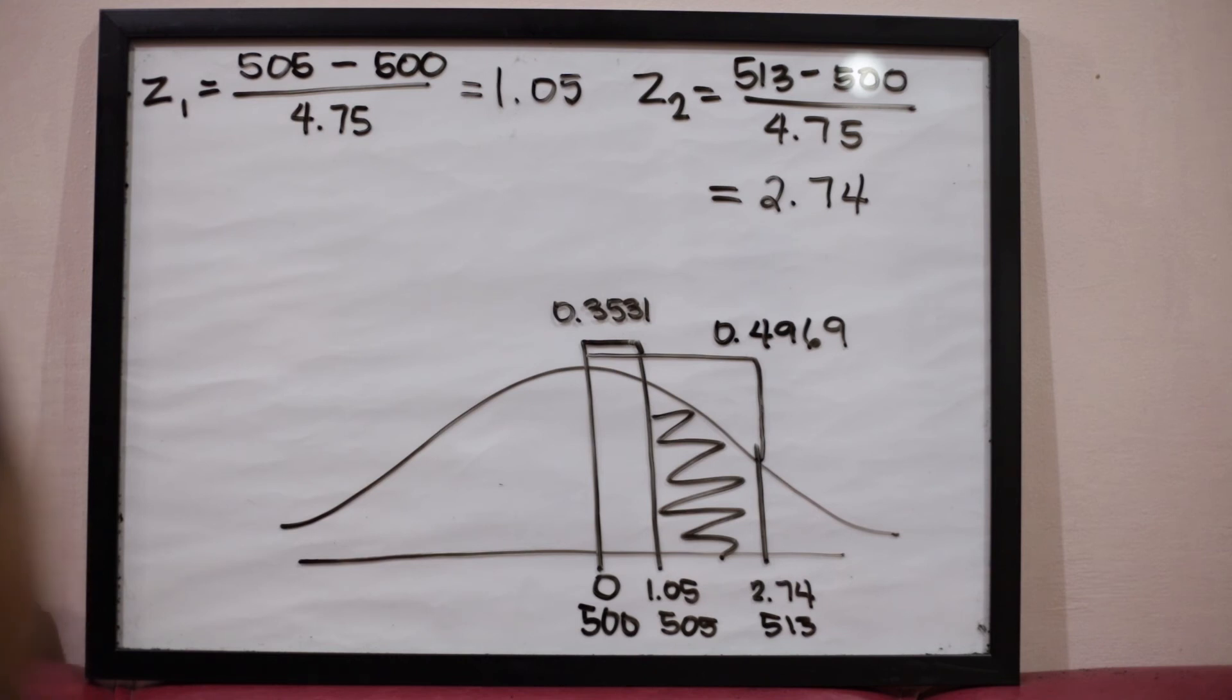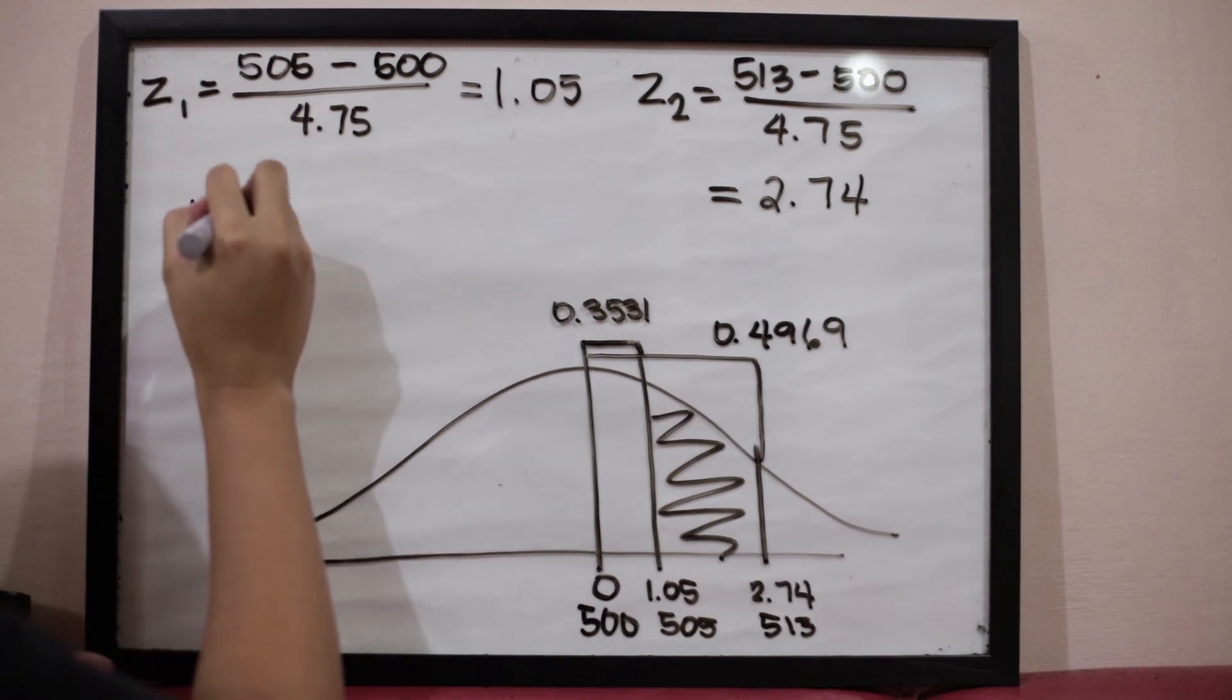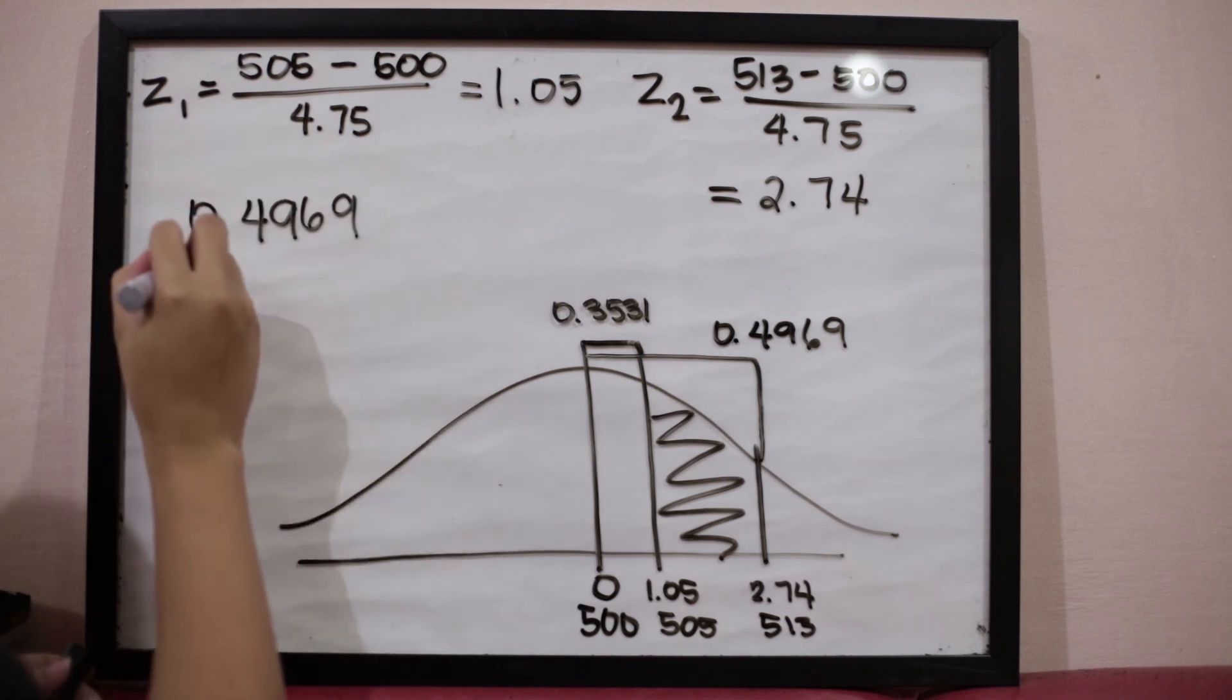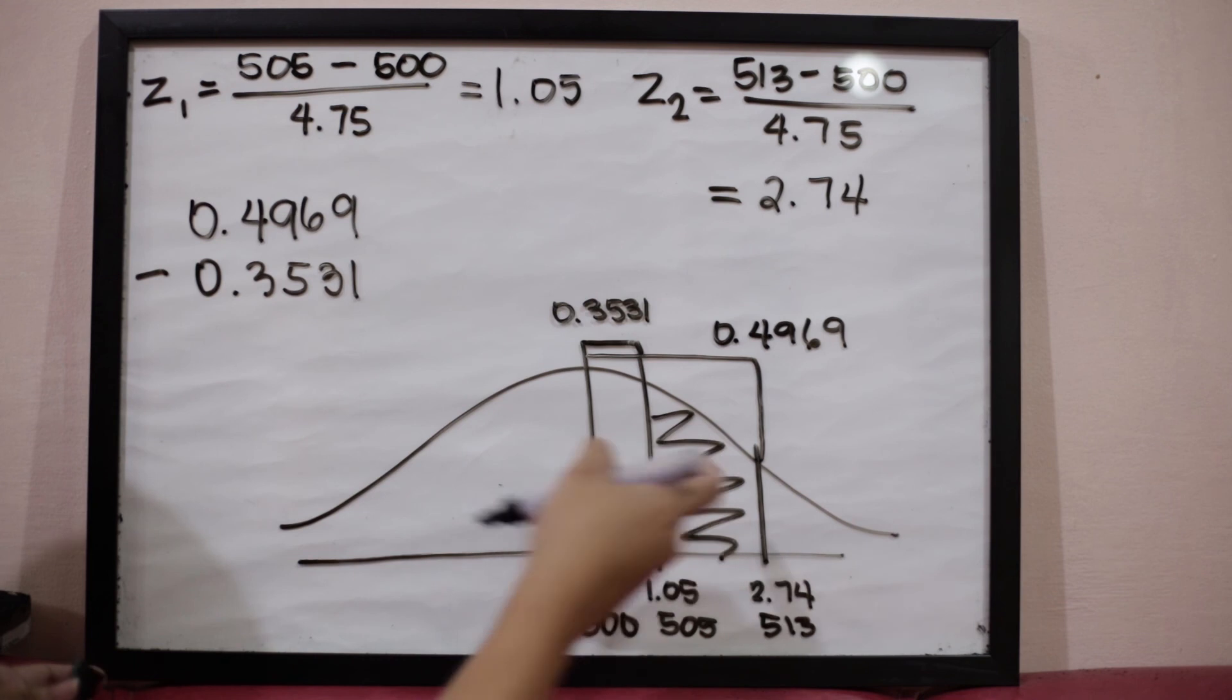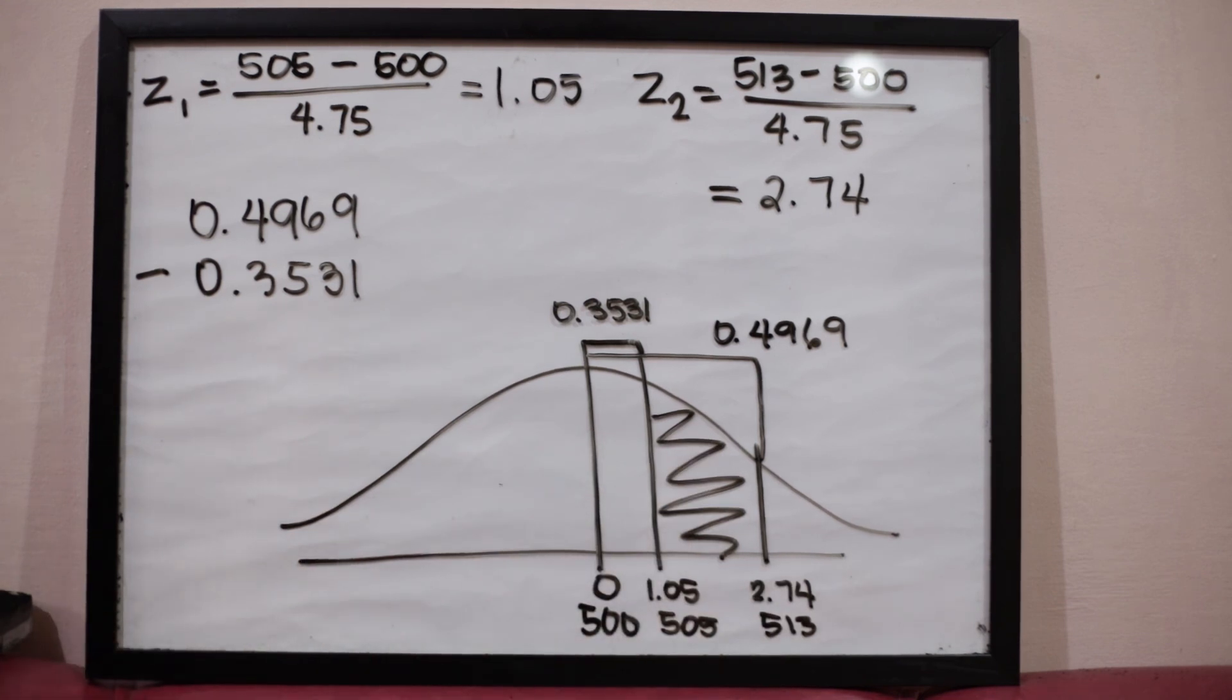Knowing those values, how are we going to obtain the area for the shaded region given these two values? If you're thinking that we have to subtract those two values, then you are correct. We have to subtract 0.4969 and 0.3531 to get this shaded region. There is no formula for this. You have to analyze what you're going to do with the given values, whether you should add the given values or subtract, or subtract the given area by 0.5 or add it by 0.5. It depends upon the given shaded region and the given values.